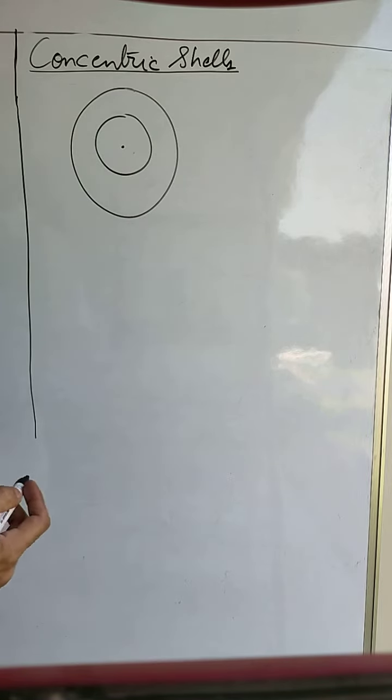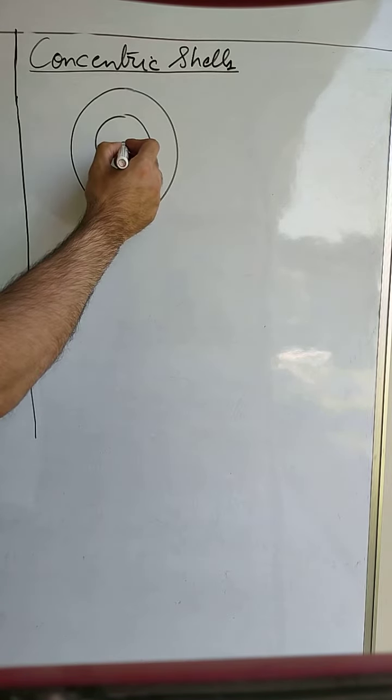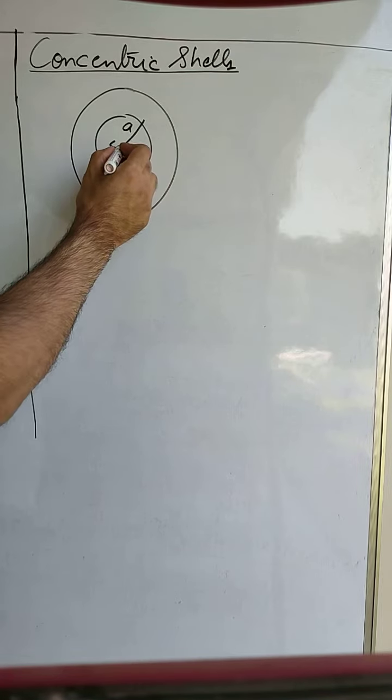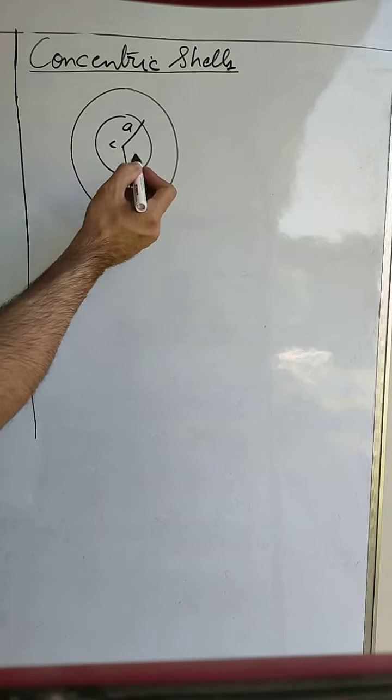Same center so it is concentric. Let the radius of the inner sphere be A, center point C, and the radius of the outer sphere be B.